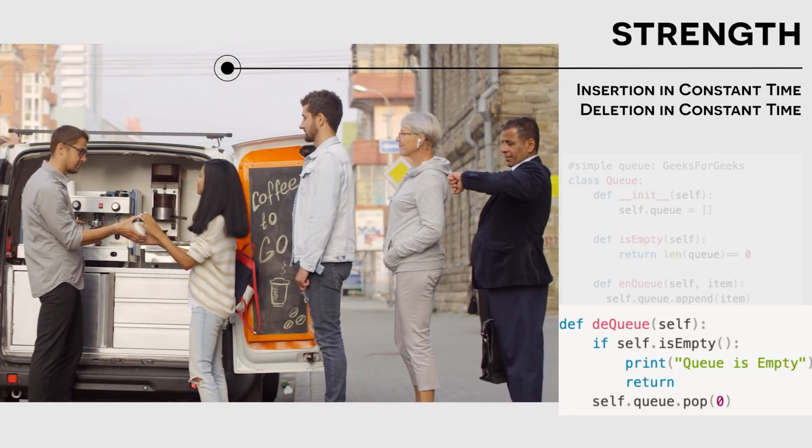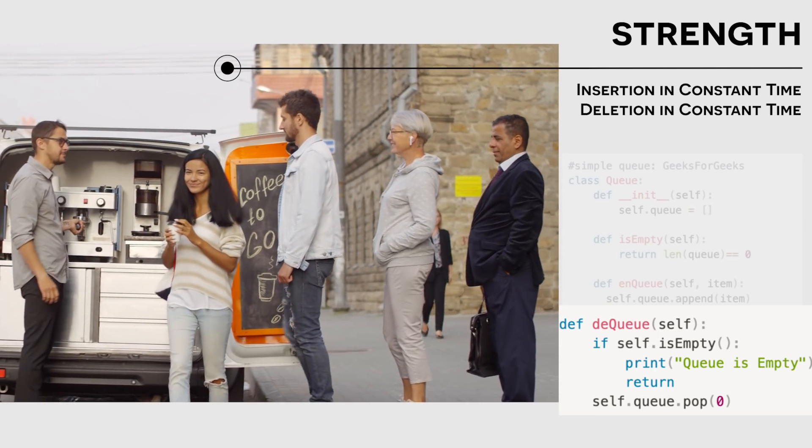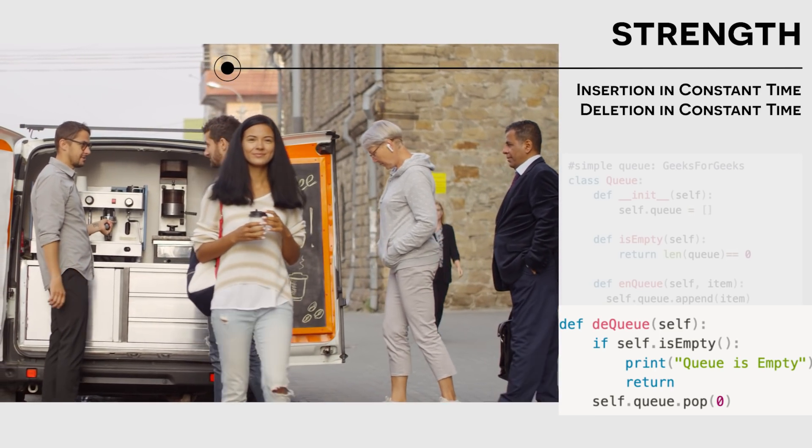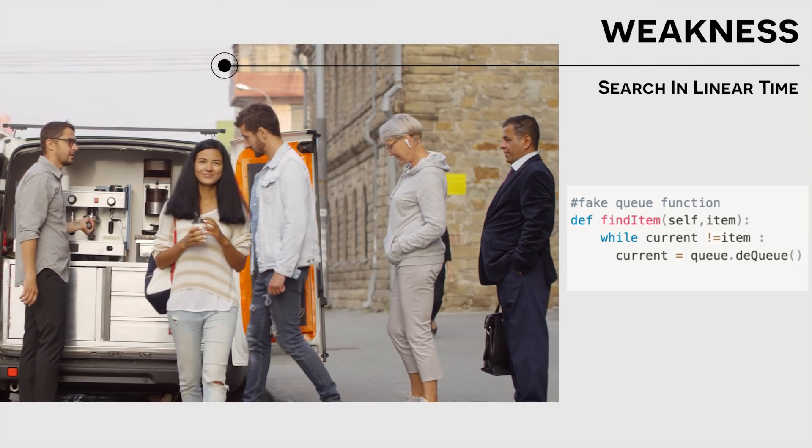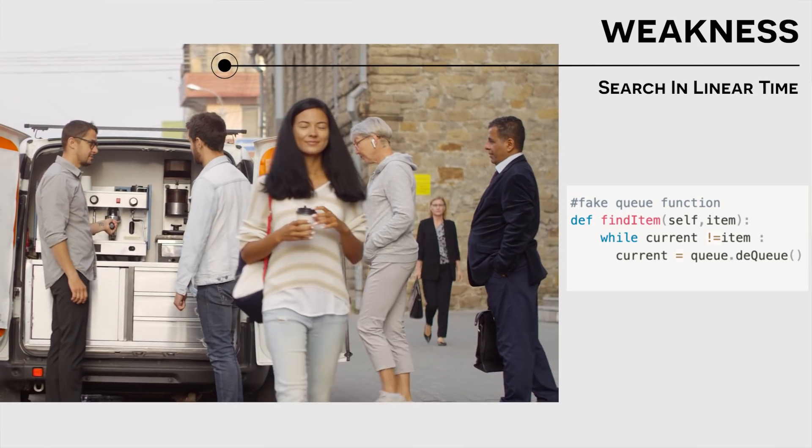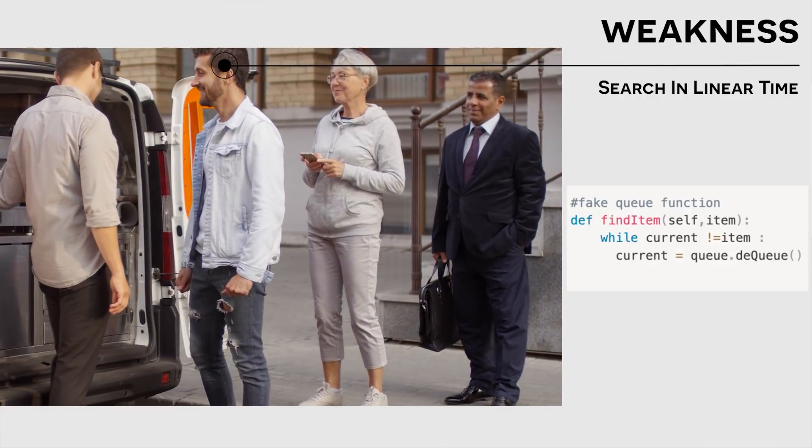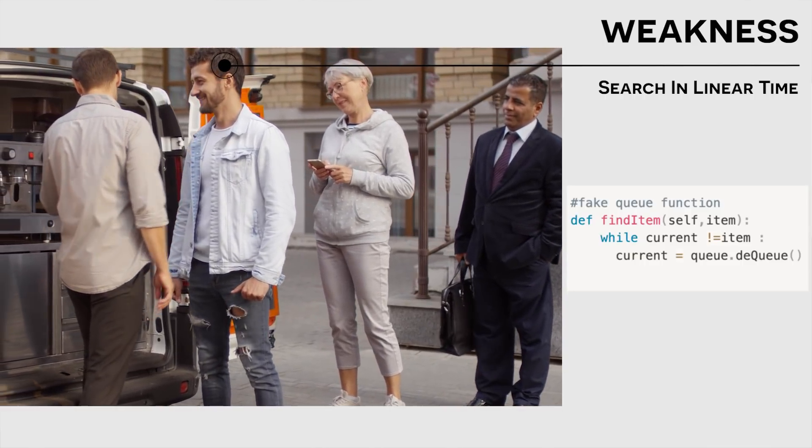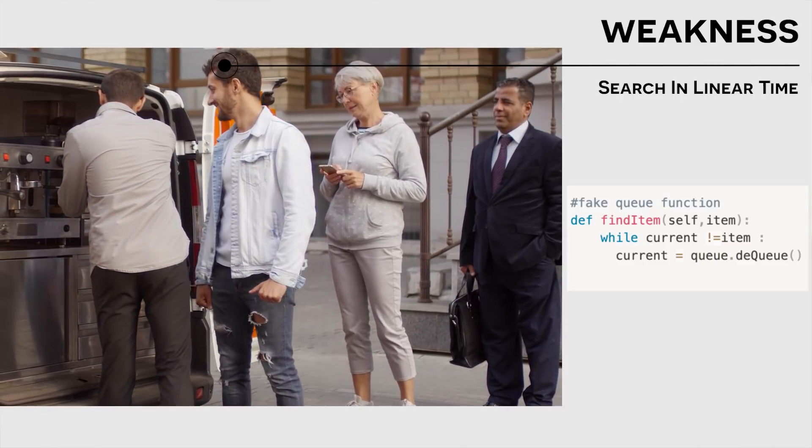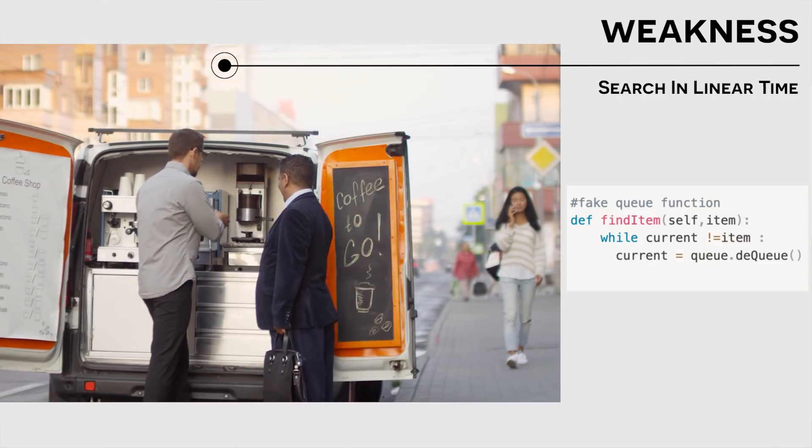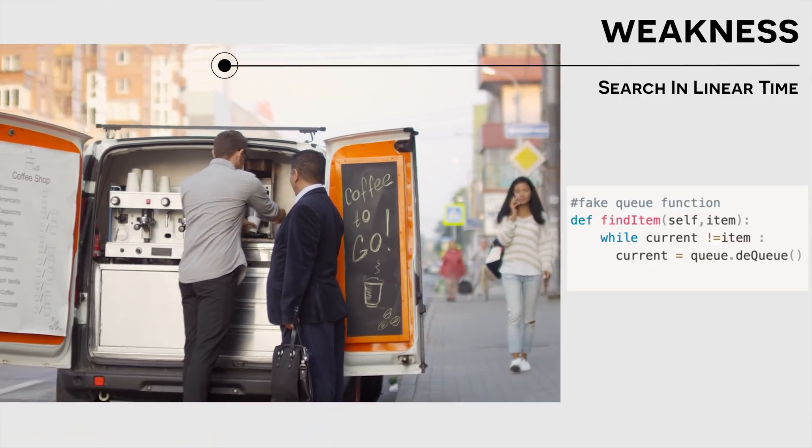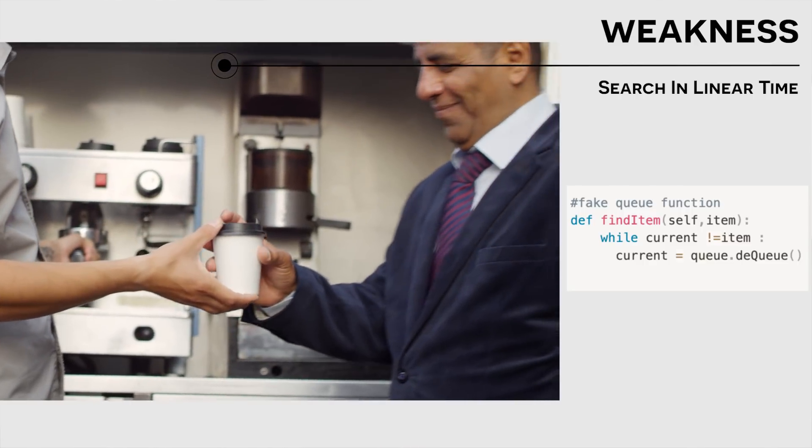But just like we said with all of our other data structures, there are going to be some disadvantages of this specific data structure. And that disadvantage like we've seen with all of our other four data structures is search. Searching for a specific item in the queue can be a little tedious. Let's say the barista wanted to access a specific person in the line like the man in the suit. He'd need to serve everyone or make sure that everyone has been dequeued before he can talk to the man in the suit. And in worst case, this happens in linear time.